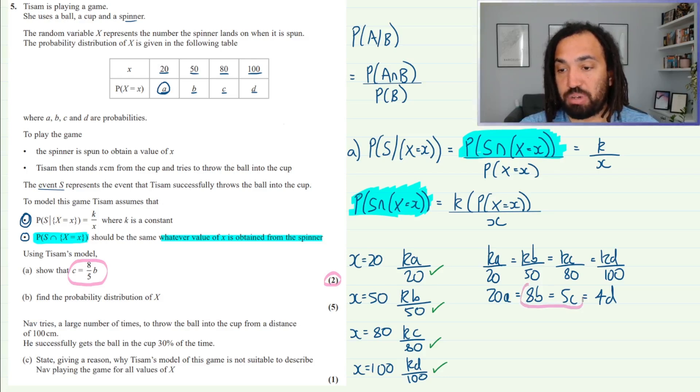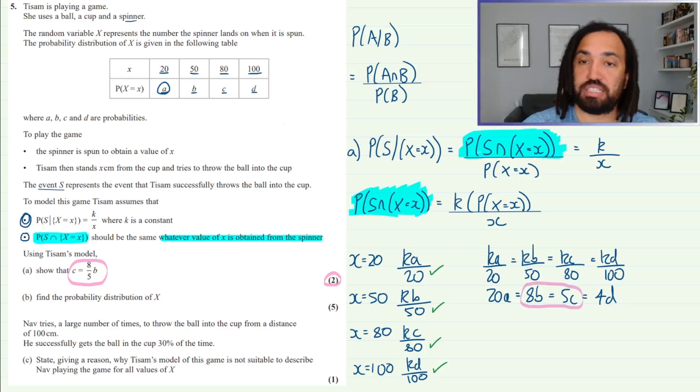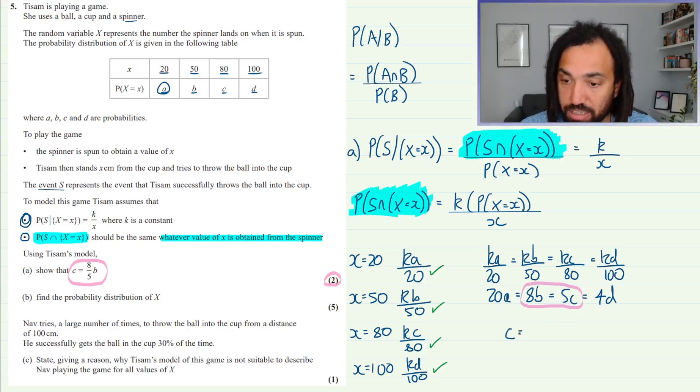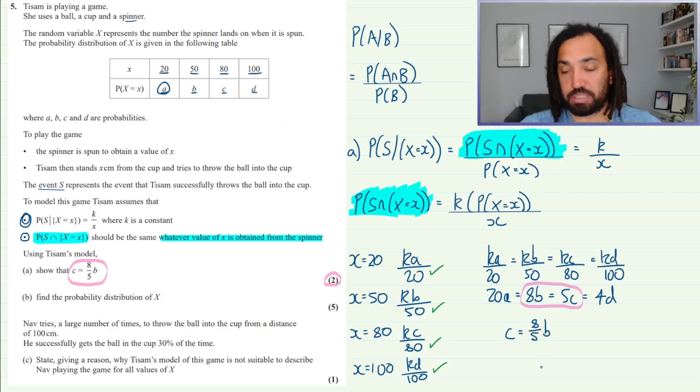Okay, so let's look at this part of this set of equations and we can rearrange that to make C the subject, just dividing both sides by 5, which is going to give me 8 over 5B is equal to C, which is exactly what we need to show. So there we go, part A has been completed.